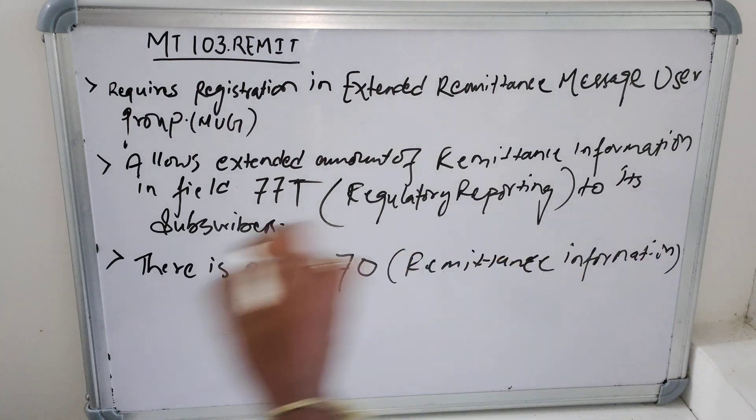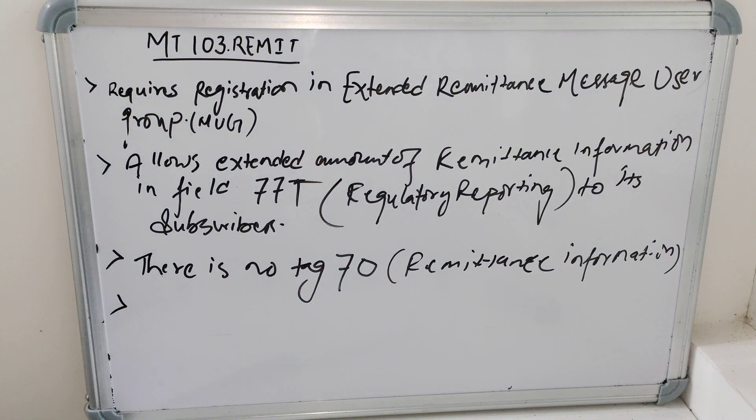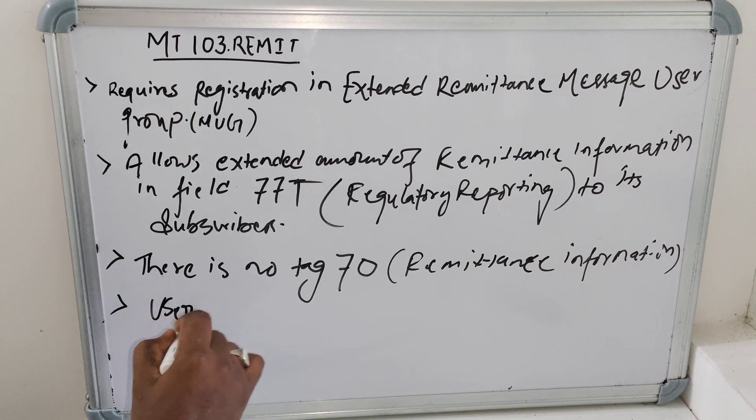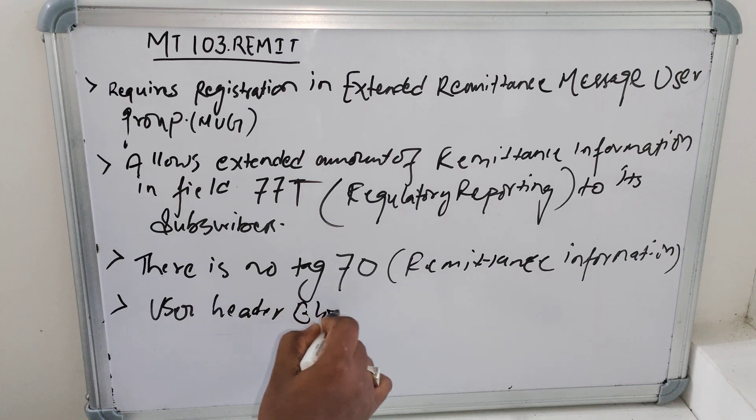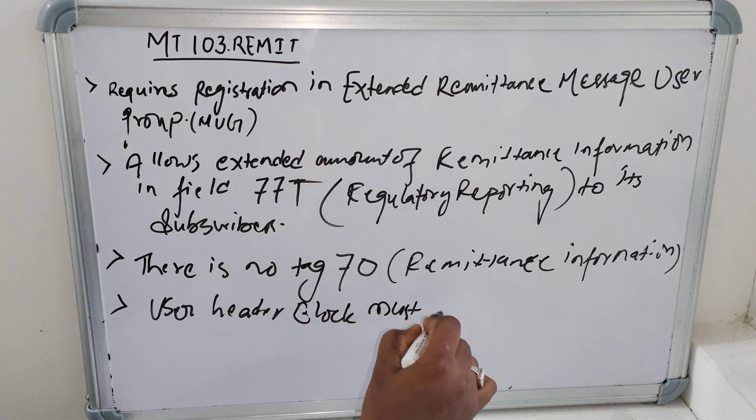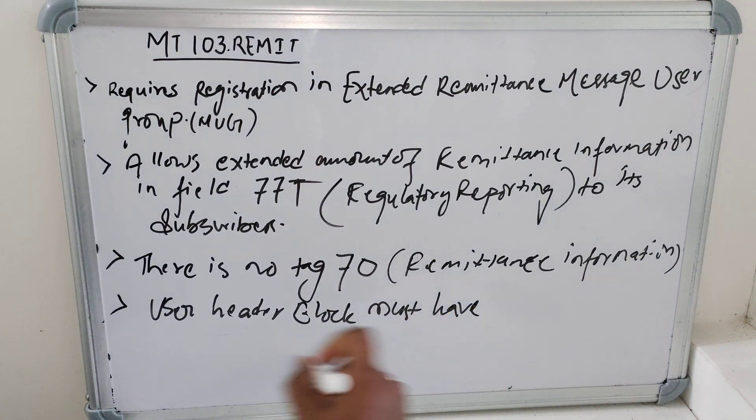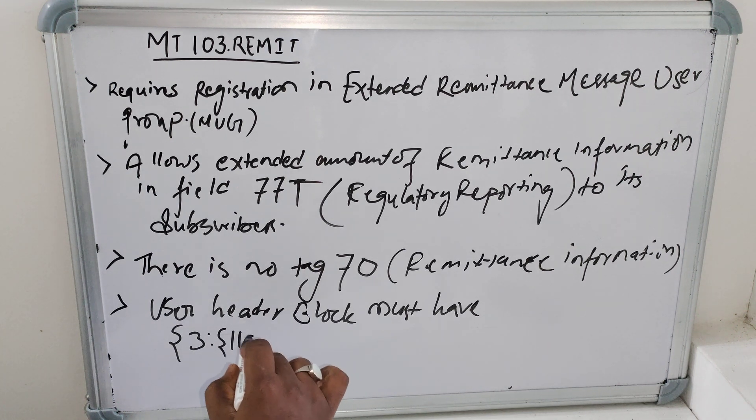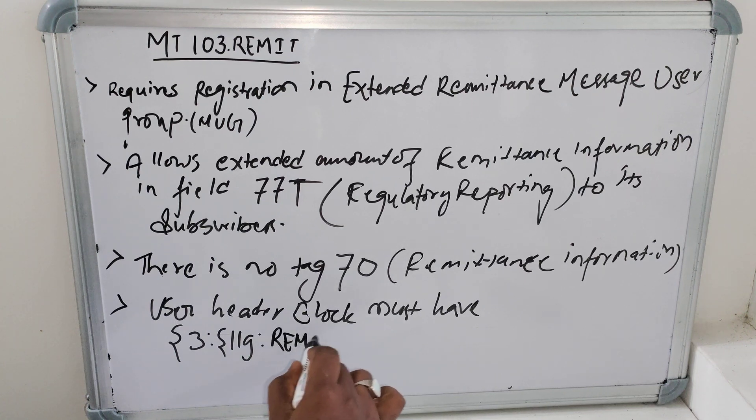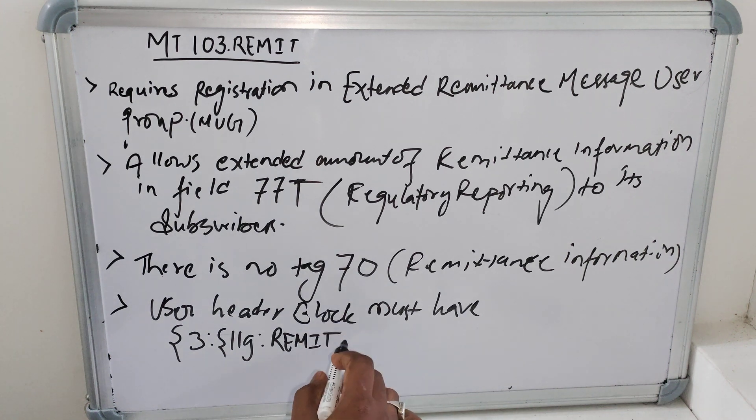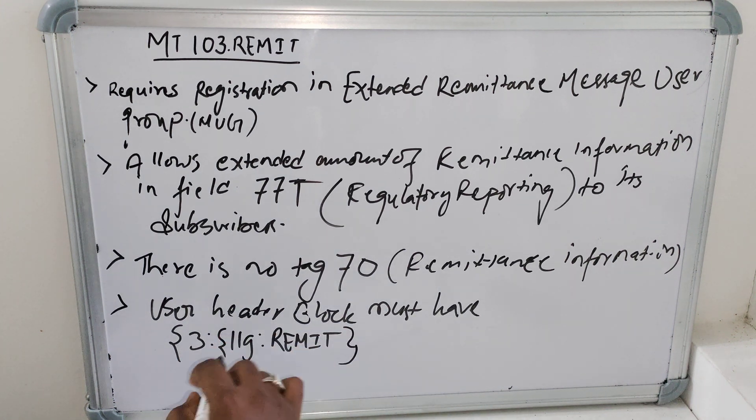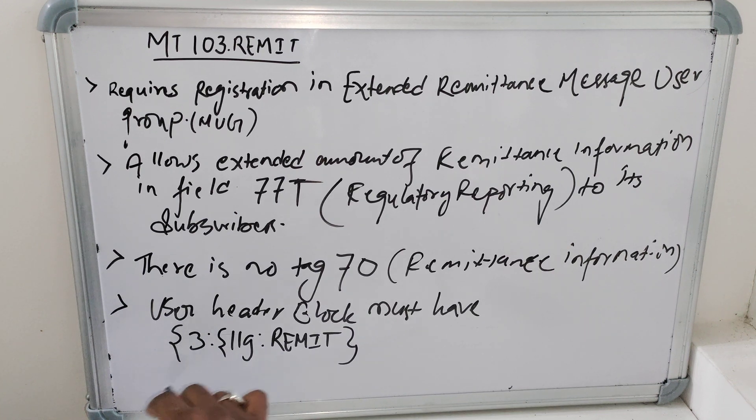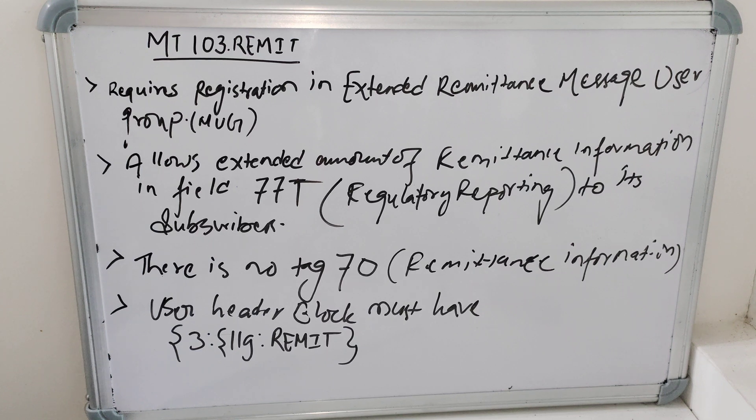Fourth one is, and very important one, user header block must have block 3 starts with 119 and then this part it should be remit. Then only it will be considered as remittance MT 103 remittance. So these are the main features of the MT 103 remittance.